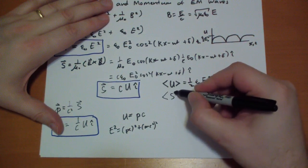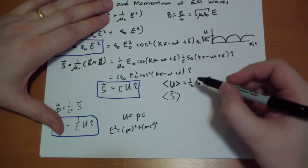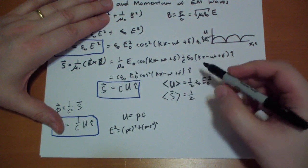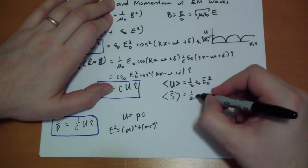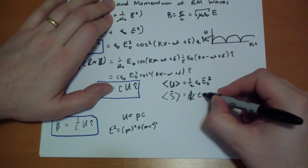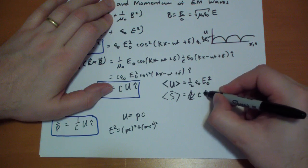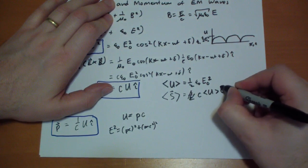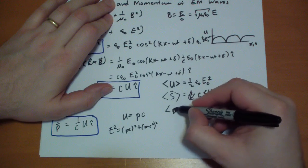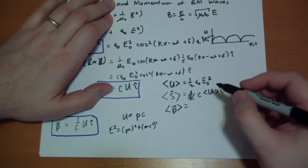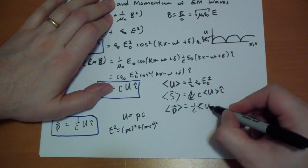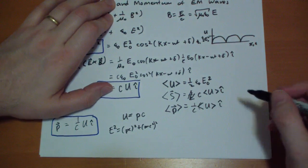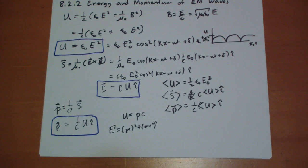So, the one half comes from the fact that the average of cosine squared is one half. And then the average of S, S vector, yes. The average of S vector is one half of cu, well, the one half is already in the u. So, c times the average of u in the i-hat direction. And the average of momentum is just one over c, the average of u in the i-hat direction. And so, the bracket notation hopefully isn't foreign to you.